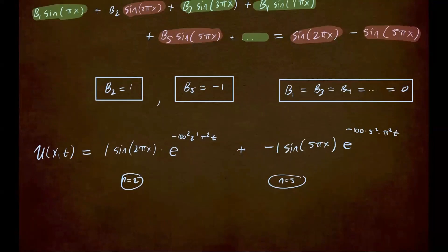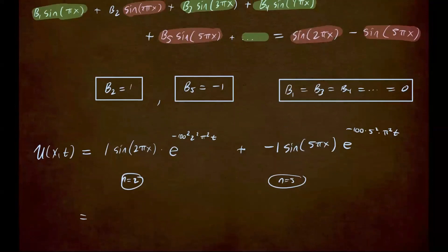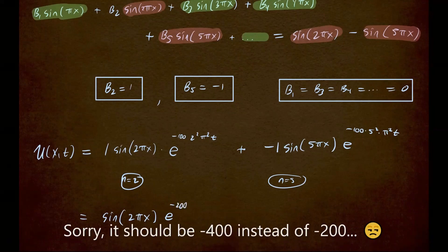And then you just clear this out. So that is really it. So your solution would be sine of 2 pi x e to the negative—so if we do 2 square, that's 4 times—I'm sorry, I made a mistake right here. It should be just 100.